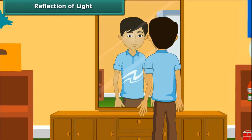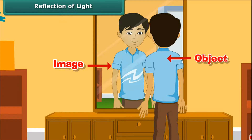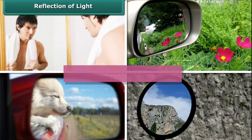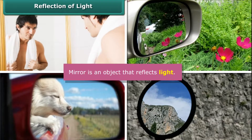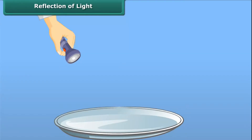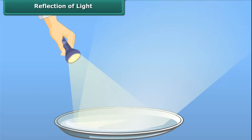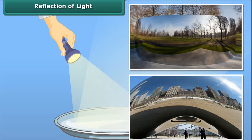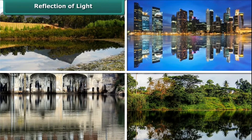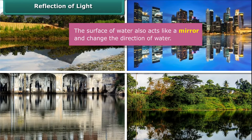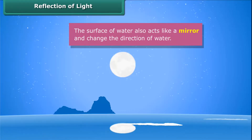It's no surprise that when we look in a mirror, we see an image of ourselves reflected back. A mirror is an object that reflects light. Now look at this shiny stainless steel plate. When light falls on its surface, it gets reflected. Therefore, any polished or shiny surface can act as a mirror and can change the direction of light. Have you ever seen reflections in water? The surface of water also acts like a mirror and changes the direction of light. Therefore, we are able to see reflections in water as well.